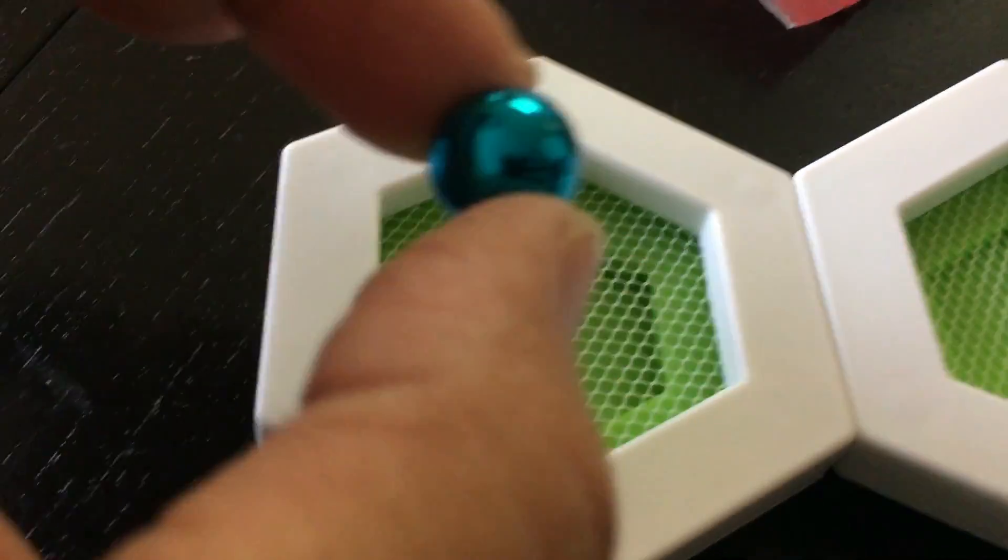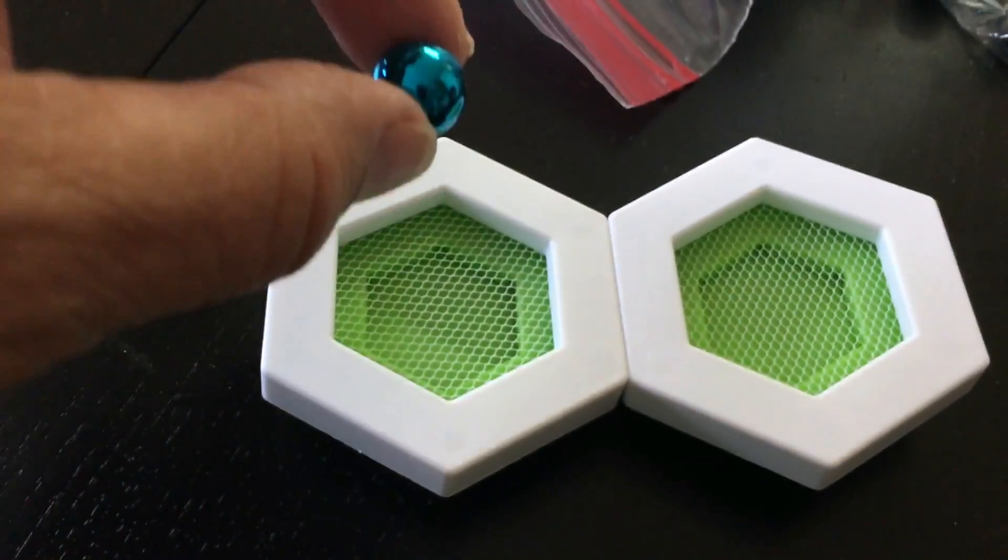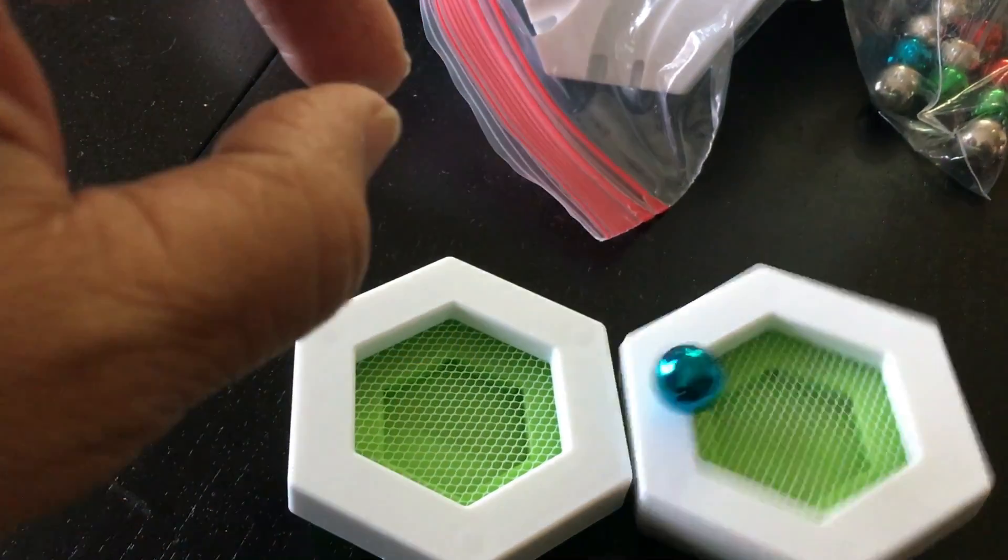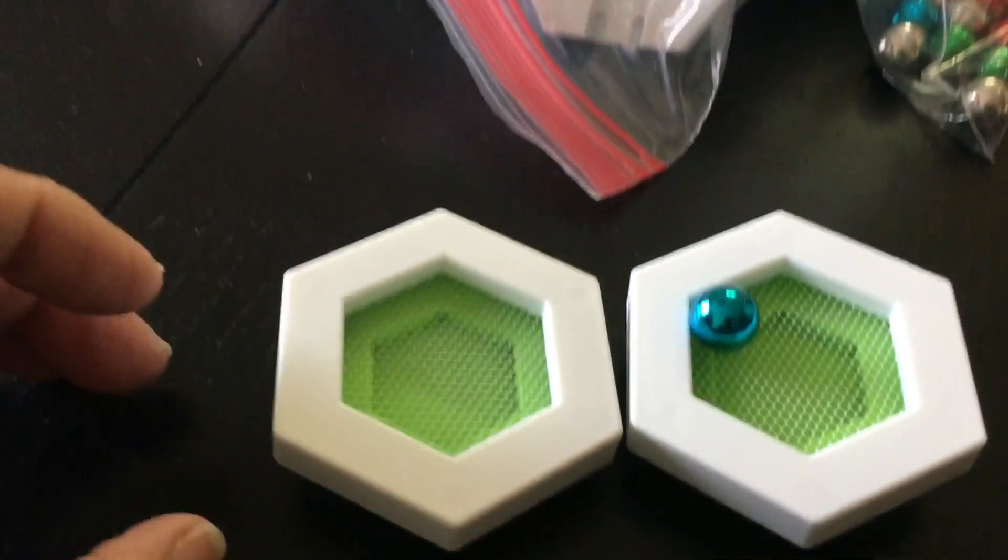This is a really cool addition to your Gravitrax collection. This comes with two trampolines. It is made of some kind of tight mesh material that allows the marble to bounce.